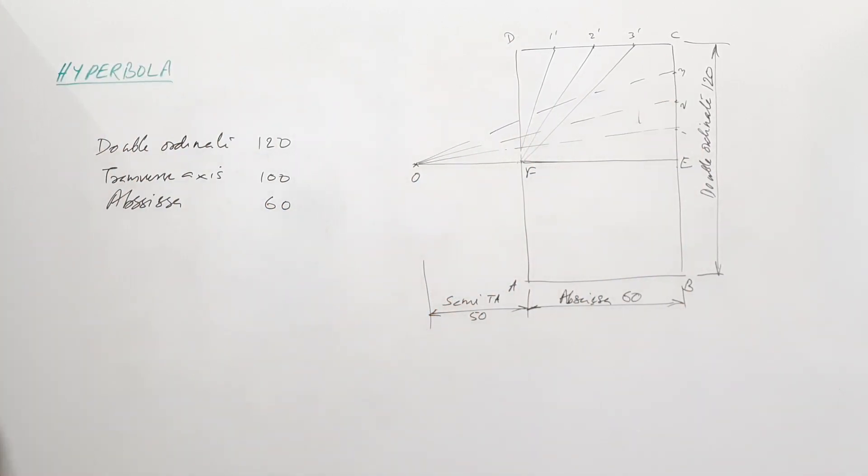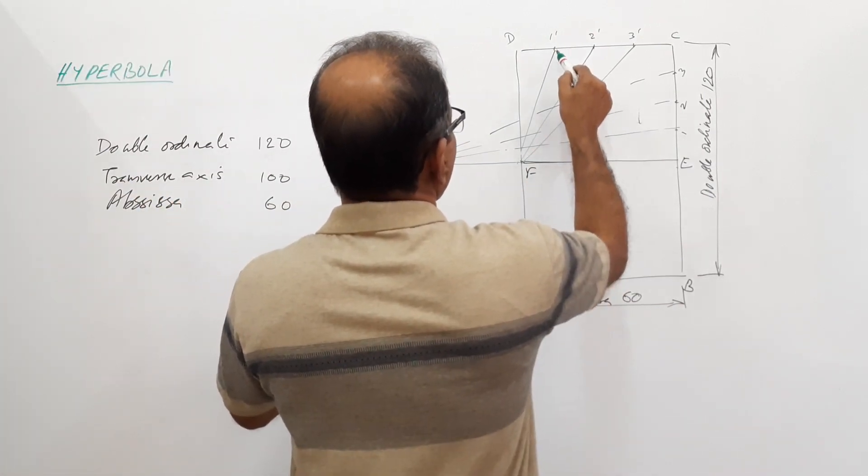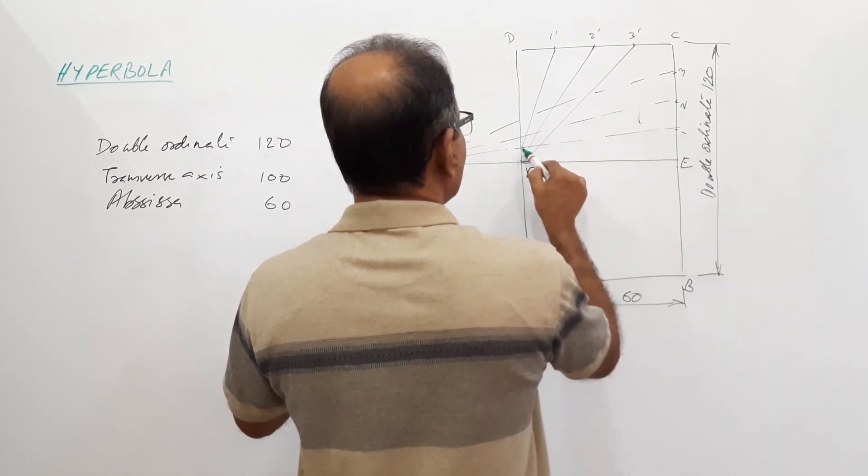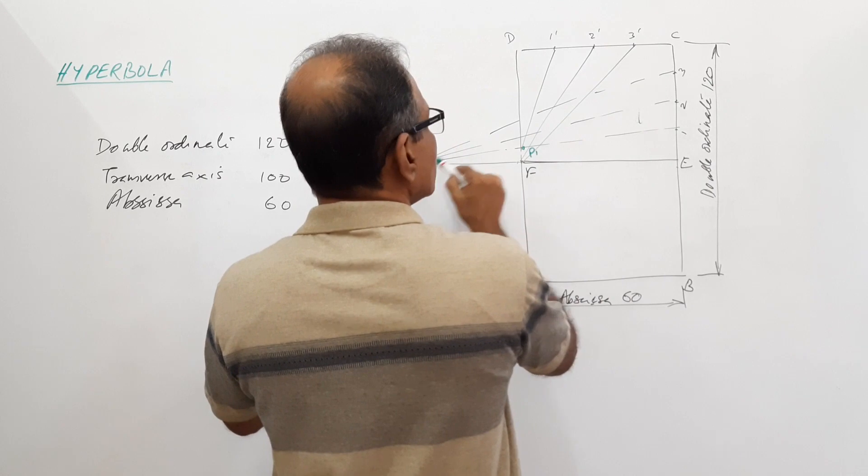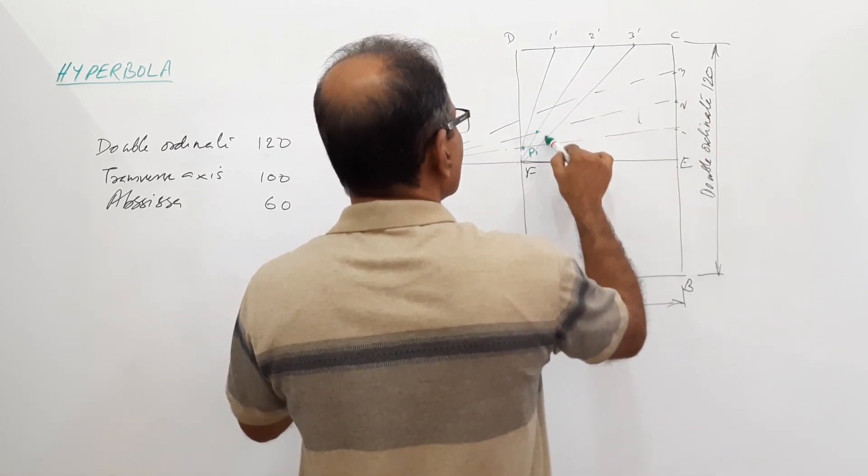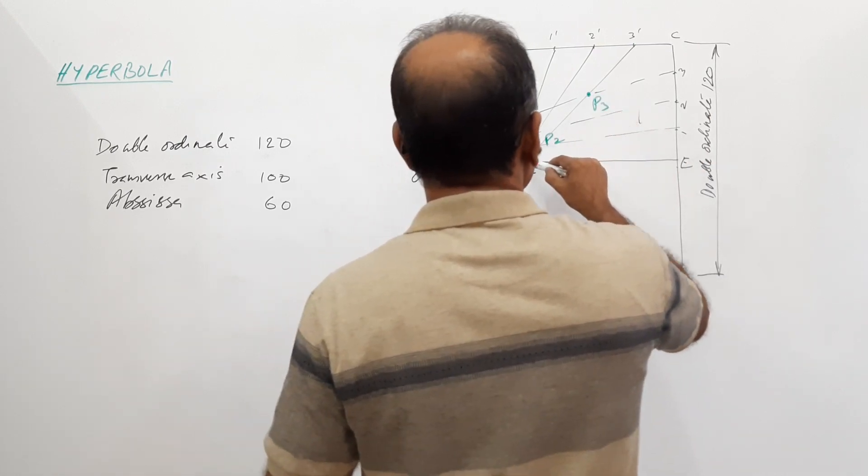You have to be careful because the length is considerably high. 1 dash cuts O1 at P1, 2 dash cuts O2 at P2, and similarly P3.